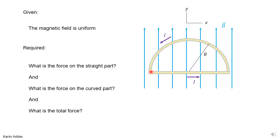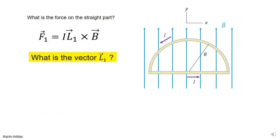If you watched the previous video, you'll know that the total force has to be zero, because any wire of any shape placed in a uniform magnetic field will have a total magnetic force of zero. We explained and derived this before, but now we want to get the force on each part — the straight part and the curved part — independently, and verify that when we add them the total force is zero.